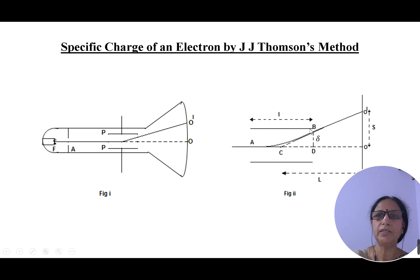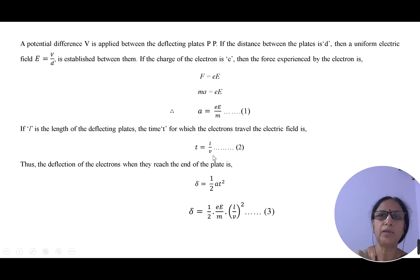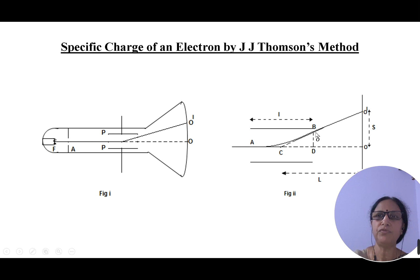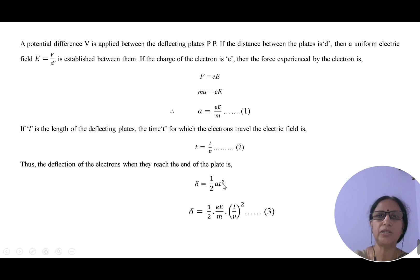If L is the length of the plate and v the velocity with which the electrons are travelling, then the time of traverse within the electric field is t = L/v — equation 2. The shift produced at the end of the plates, delta, is calculated using s = ut + ½at². Taking u = 0, since the initial velocity component of the electron beam perpendicular to its motion is zero, we get delta = ½at². Substituting the value of a from equation 1 and t from equation 2, we get delta = ½ · (eE/m) · (L/v)² — equation number 3.